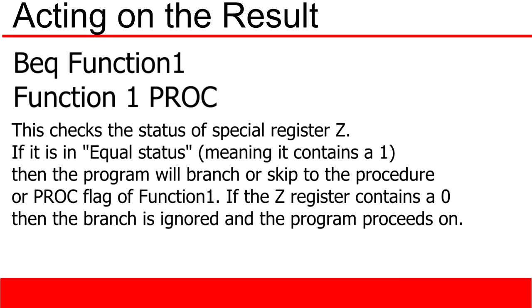After we have collected and compared the data, it is time to branch. We will use the branch equal to, or BEQ, function. What this function does is it checks the value of the special Z register. If the contents of the special Z register are equal to 1, that means that the two compared values are equal. If they are equal, the program will look for a function 1 procedure flag and then jump to that flag when it finds it.